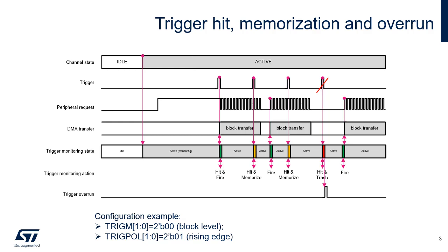This timing diagram illustrates the trigger hit, the trigger memorization, and the trigger overrun in the configuration example with a block level trigger mode and a rising edge trigger polarity. The DMA monitoring of a trigger for a channel X is started when the channel is enabled or loaded with a new active trigger configuration — rising or falling edge on a selected trigger. The monitoring of this trigger is kept active during the triggered and uncompleted transfer.